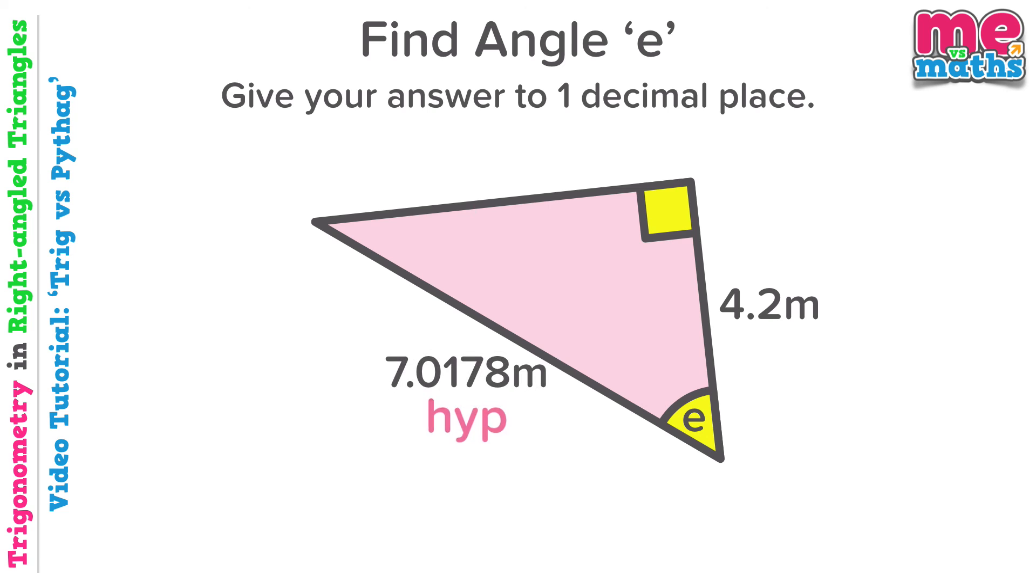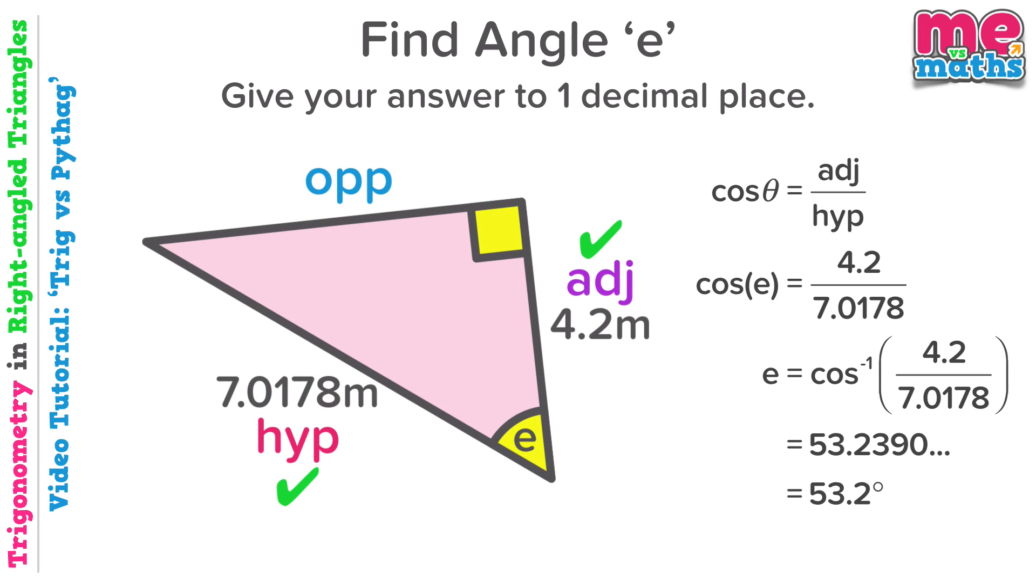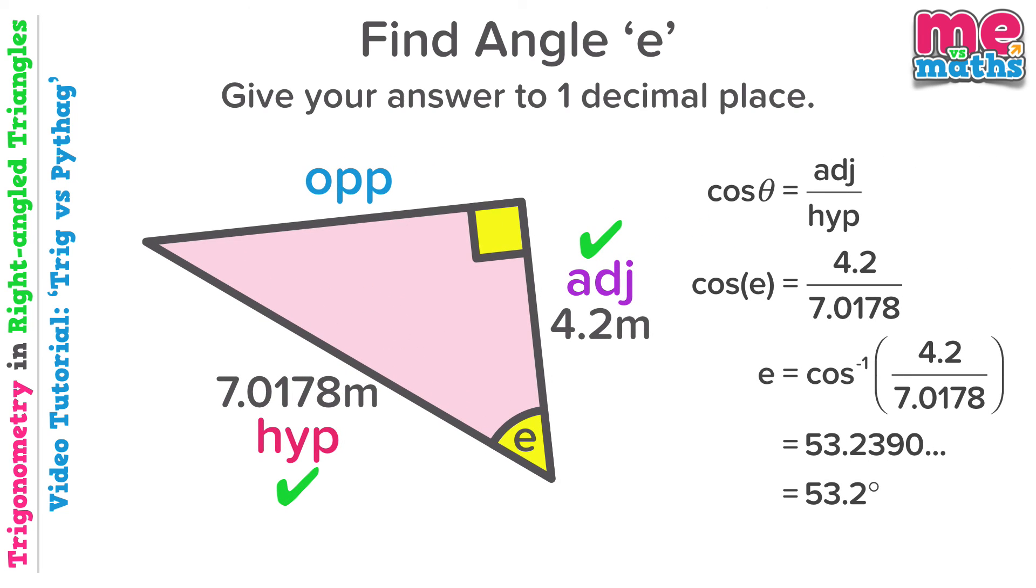Let's do just that. Label our sides up and identify our active sides. We'll be using cos, and as we're looking for an angle again, we'll be using the inverse function like so. Again, just pause the video for a second here if you wanted to have a good look at that working out.